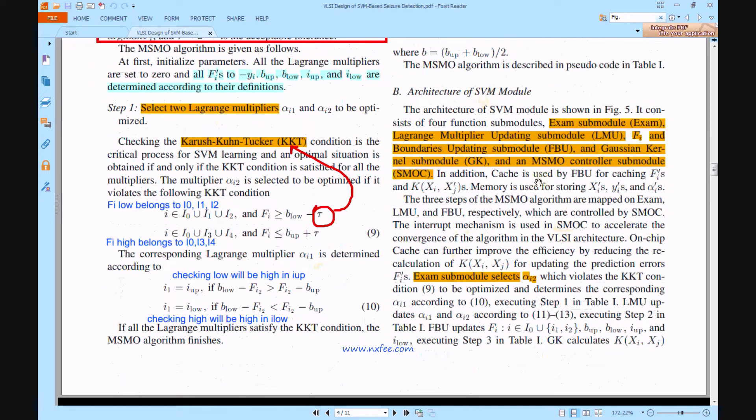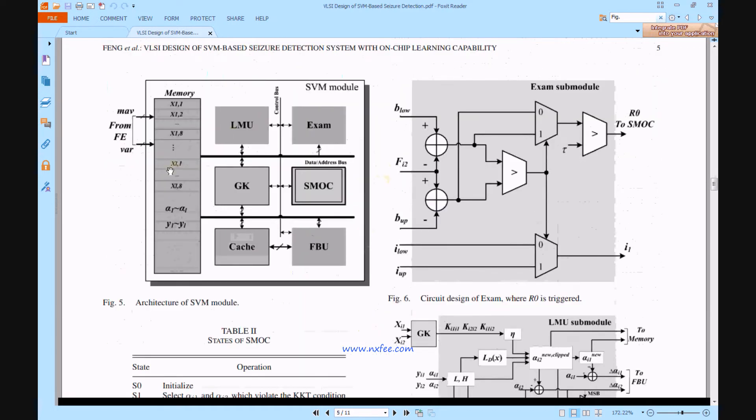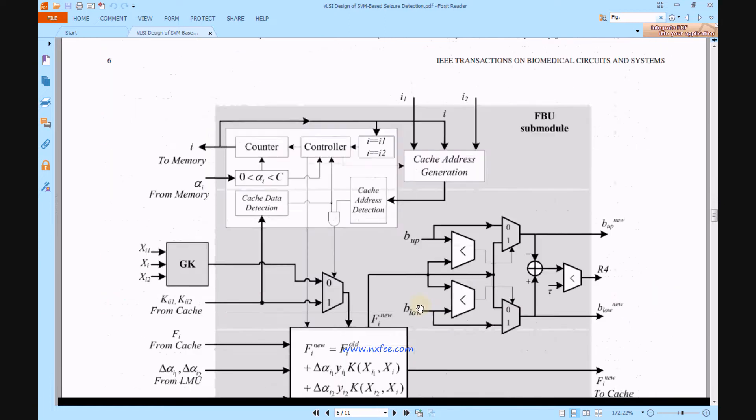The architecture of the SVM model includes exam submodules, Lagrange multiplication updating submodules, boundaries updating submodules, Gaussian kernel submodules, and MSMO controller submodules. This architecture is shown in Figure 5, which gets input from MAV and VAR. This data is stored in memory, then we call LMU, GK, CACHE, FBU, SMOC, and exams.